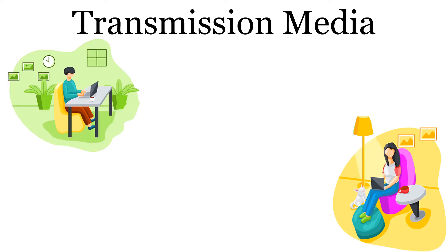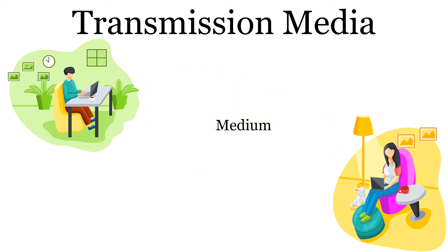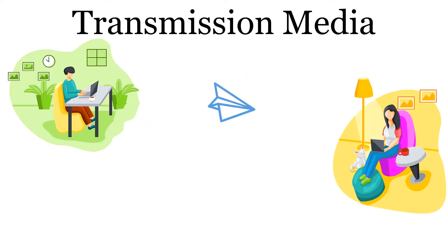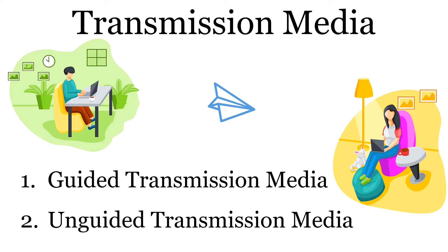Whenever we send data from one system to another system, it is transmitted in the form of signals. These signals require some kind of transmission medium to travel from sender towards destination. There are various kinds of transmission media. We broadly classify them into two categories, i.e. guided transmission media and unguided transmission media.